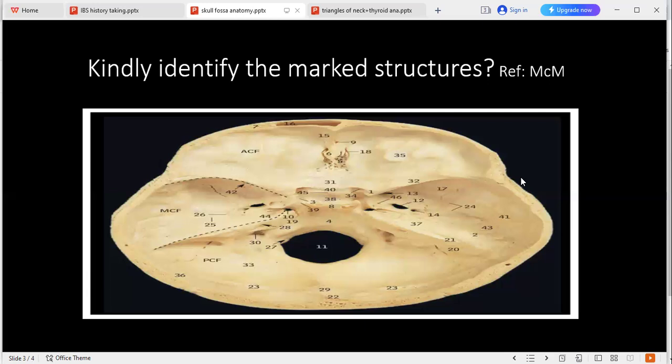Can you identify number 37? It seems to be tegmen tympani. Can you please tell me what are the contents of the carotid canal? Carotid canal has the internal carotid artery.